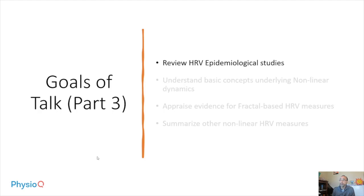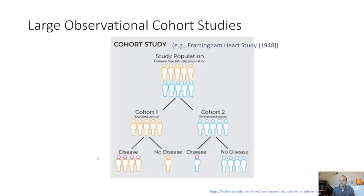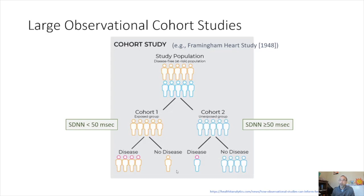We'll start by reviewing HRV epidemiological studies. A large observational cohort study — such as the Framingham Heart Study, which enrolled its first patient in 1948 — typically recruits a large number of people from a community and observes them over time to assess how a risk factor affects a specific outcome. In our case, we want to see how heart rate variability measures like SDNN relate to development of a cardiovascular event or death.